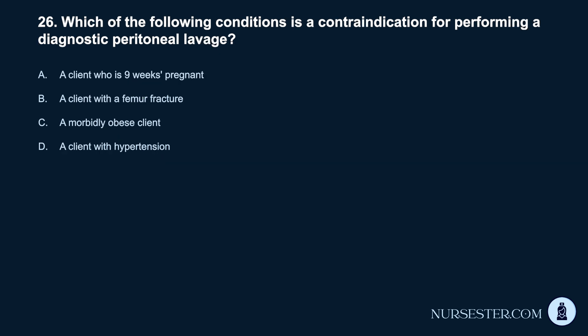Question 26. Which of the following conditions is a contraindication for performing a diagnostic peritoneal lavage? A. A client who is 9 weeks pregnant. B. A client with a femur fracture. C. A morbidly obese client. D. A client with hypertension.